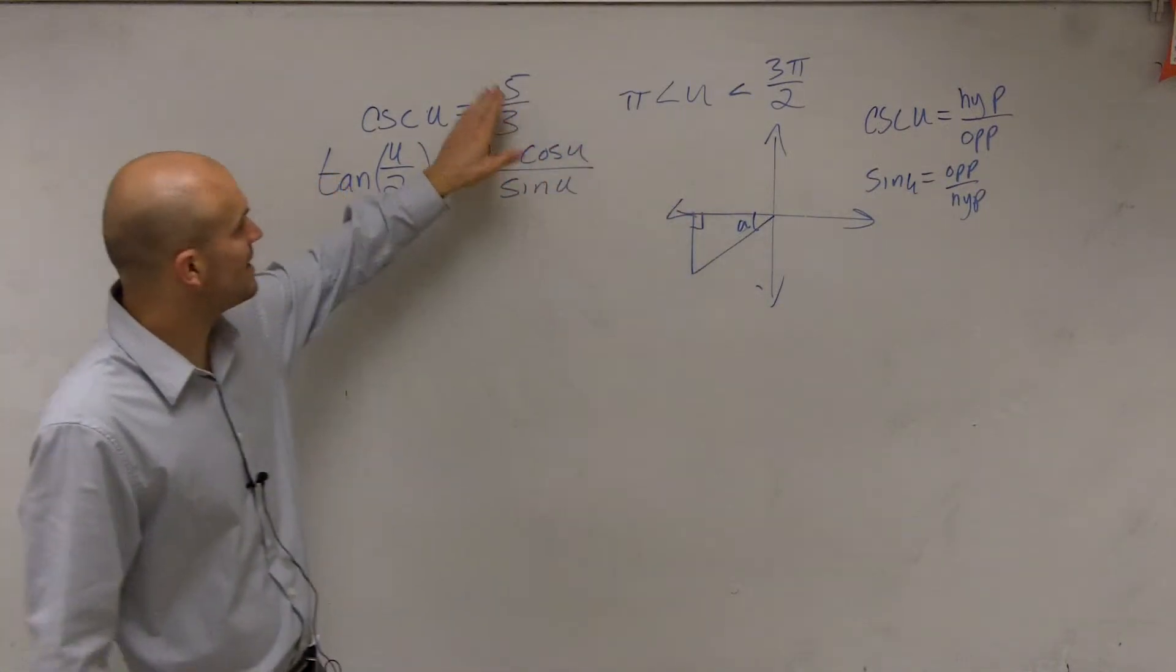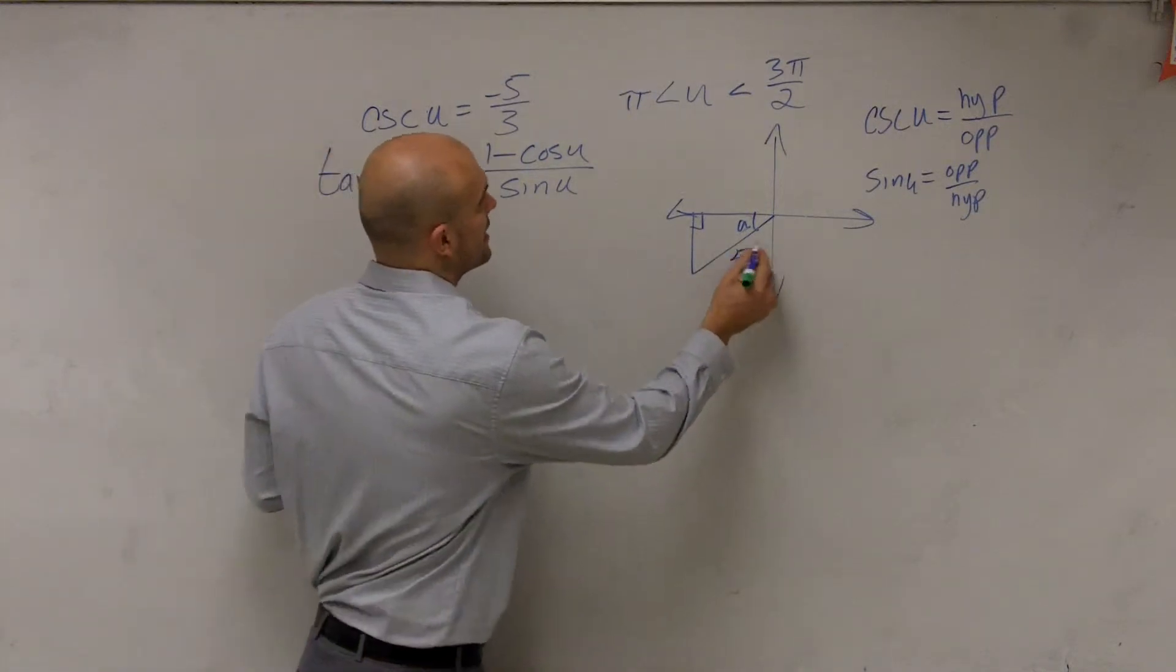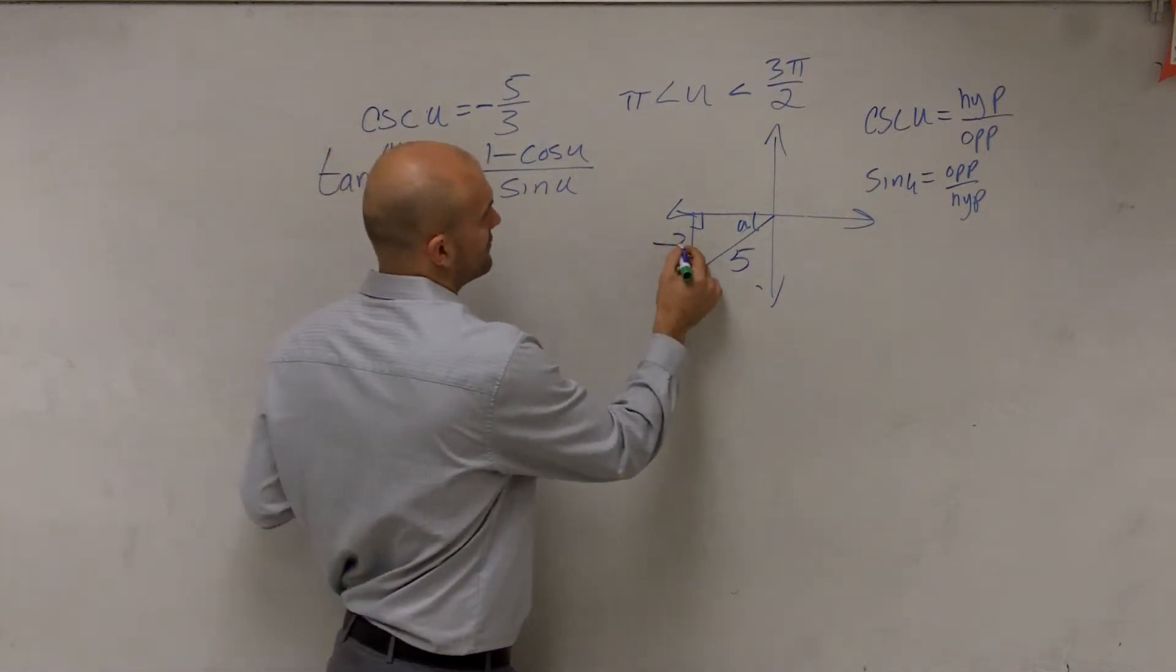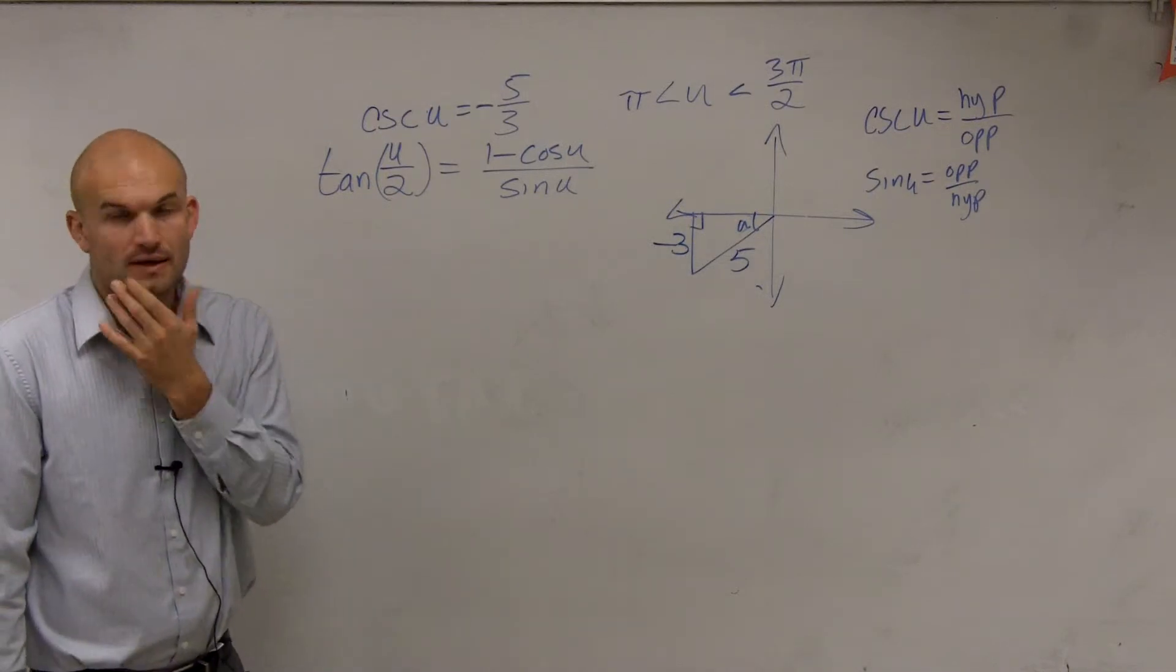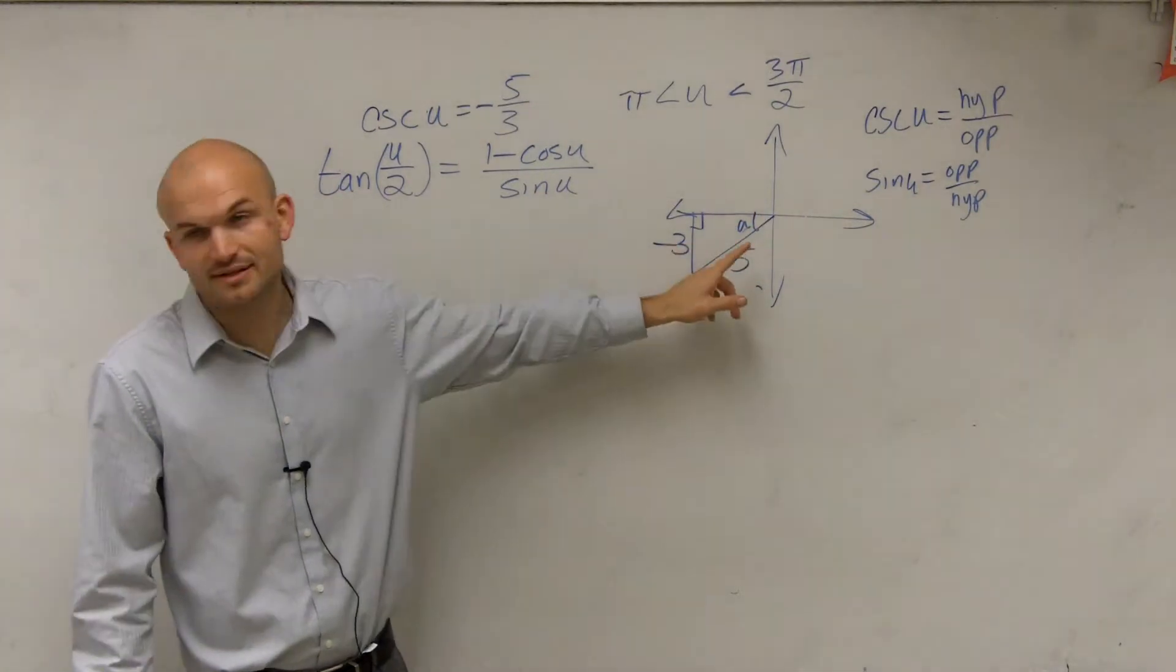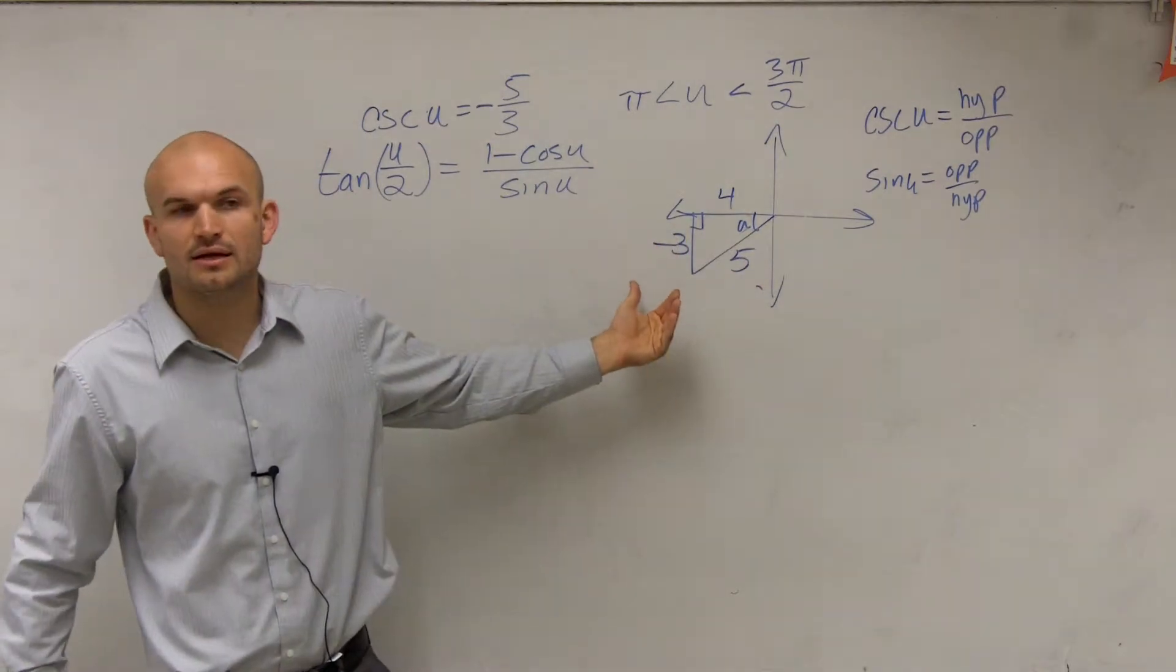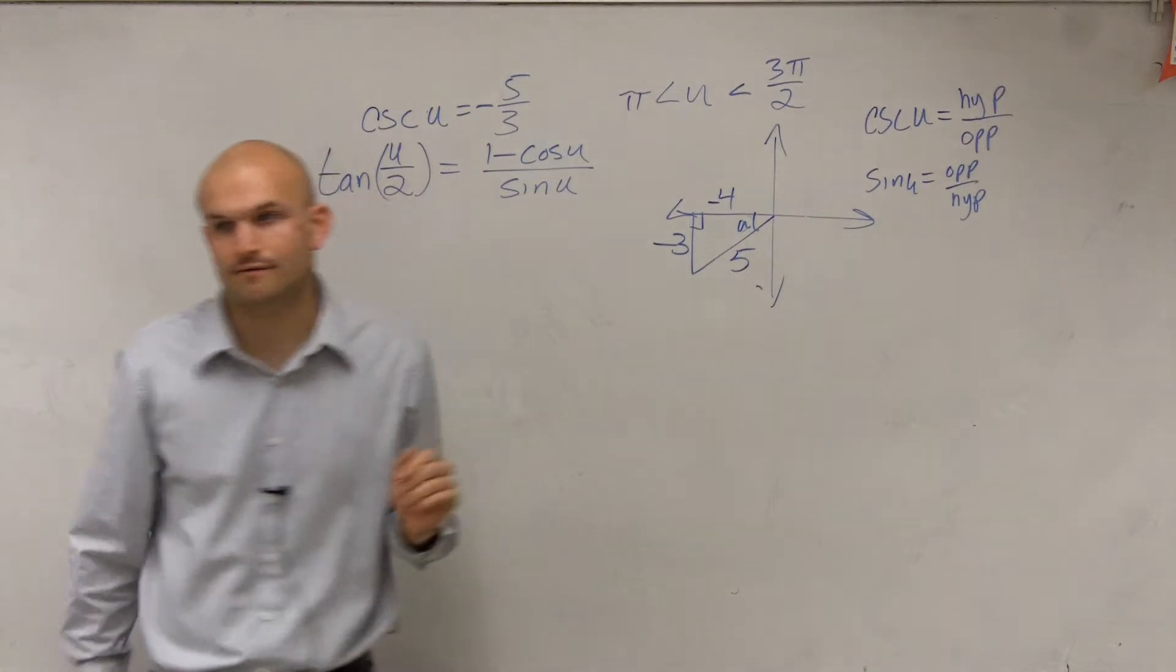So we look at this and we have 3 and 5. Therefore, we have our hypotenuse, and I should probably write this negative in front, but we have our hypotenuse is 5 and then our opposite is negative 3. Then now we need to figure out what our adjacent side is. We notice that this is a Pythagorean triple, so this is going to be 4. And since we're dealing with an angle in the third quadrant, we know that has to be negative.